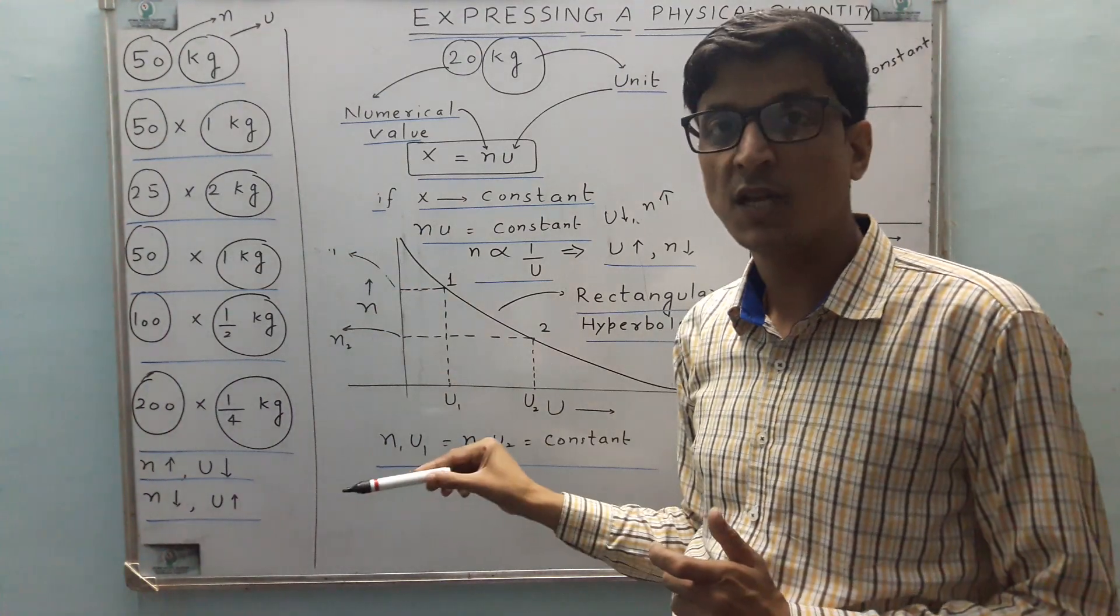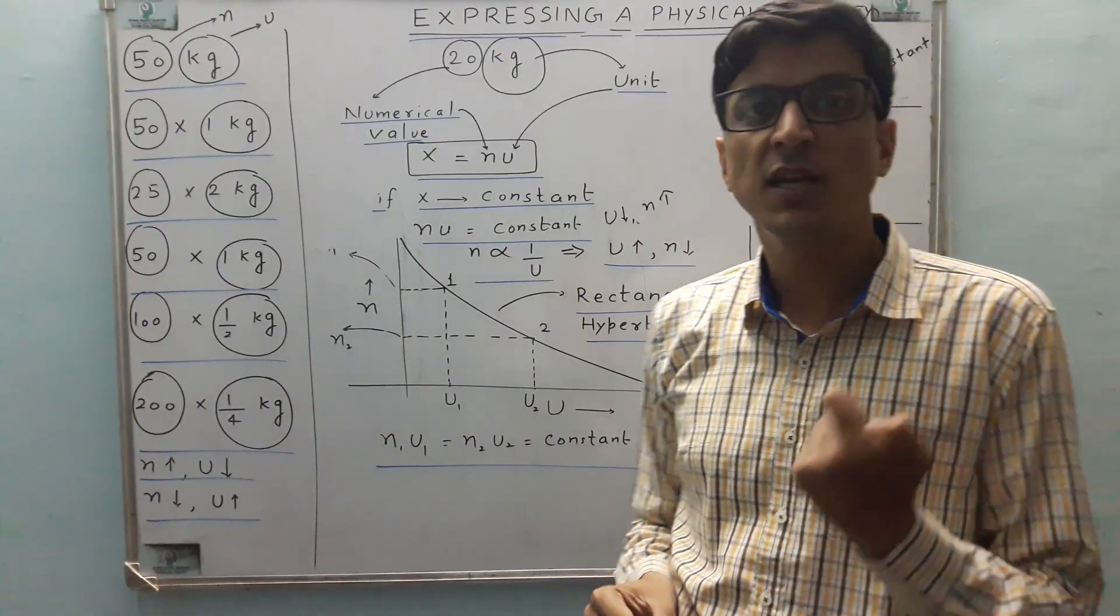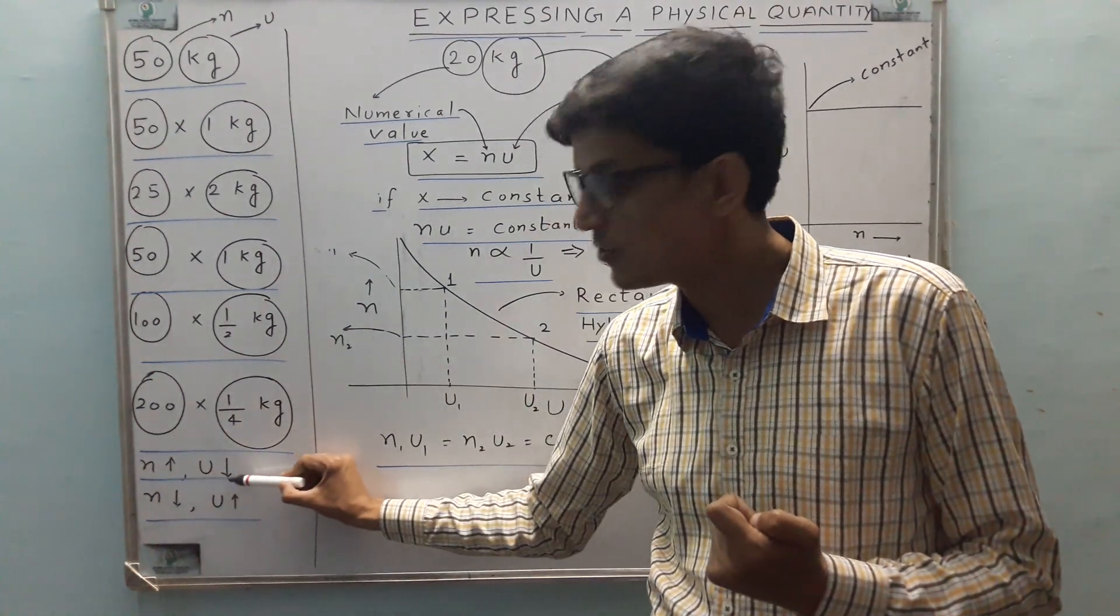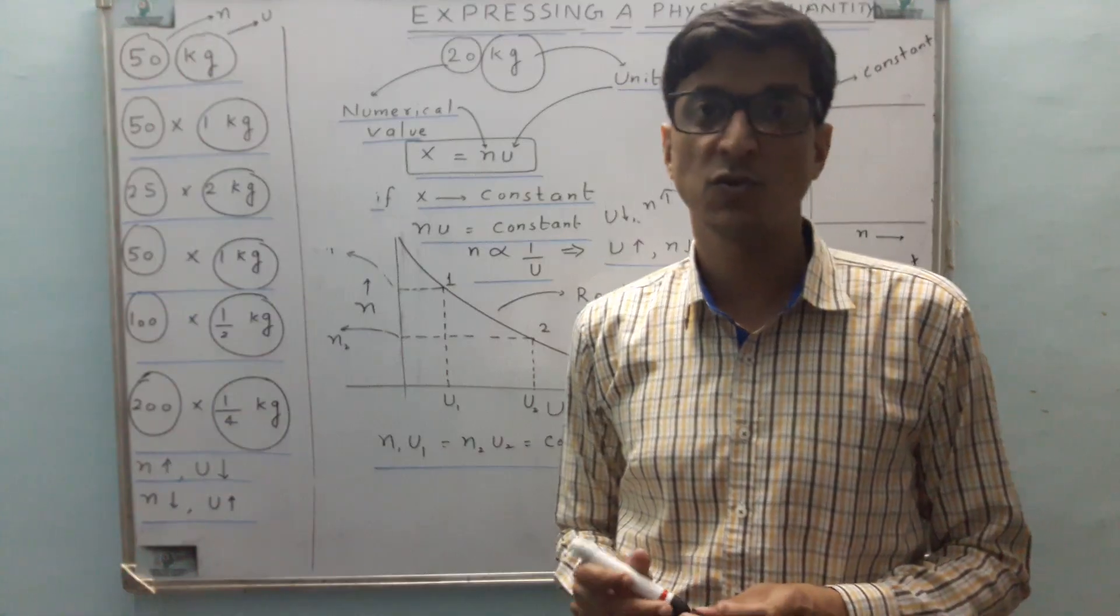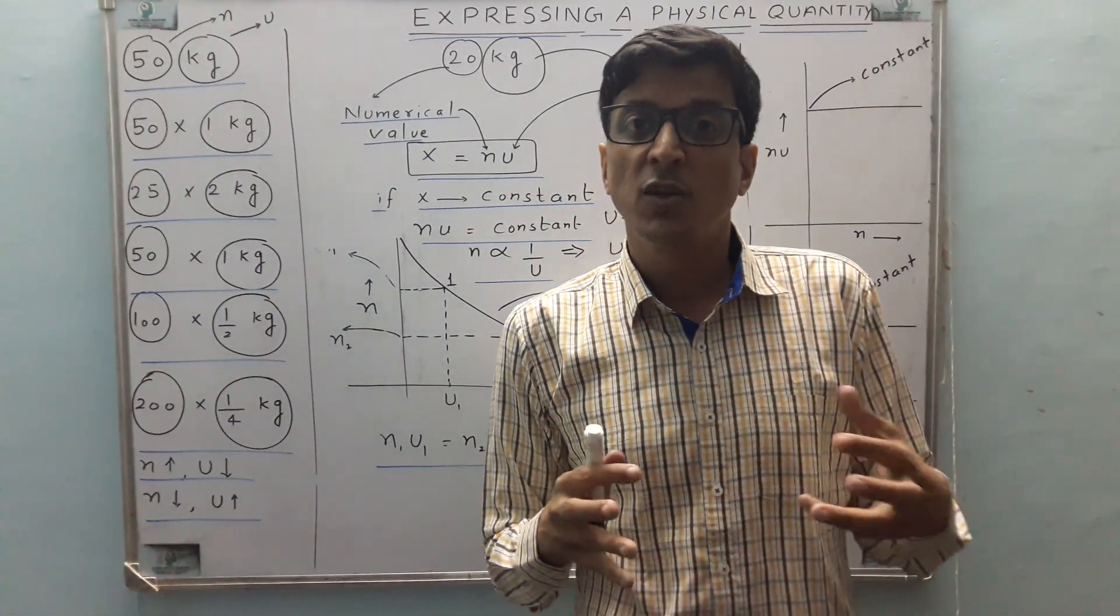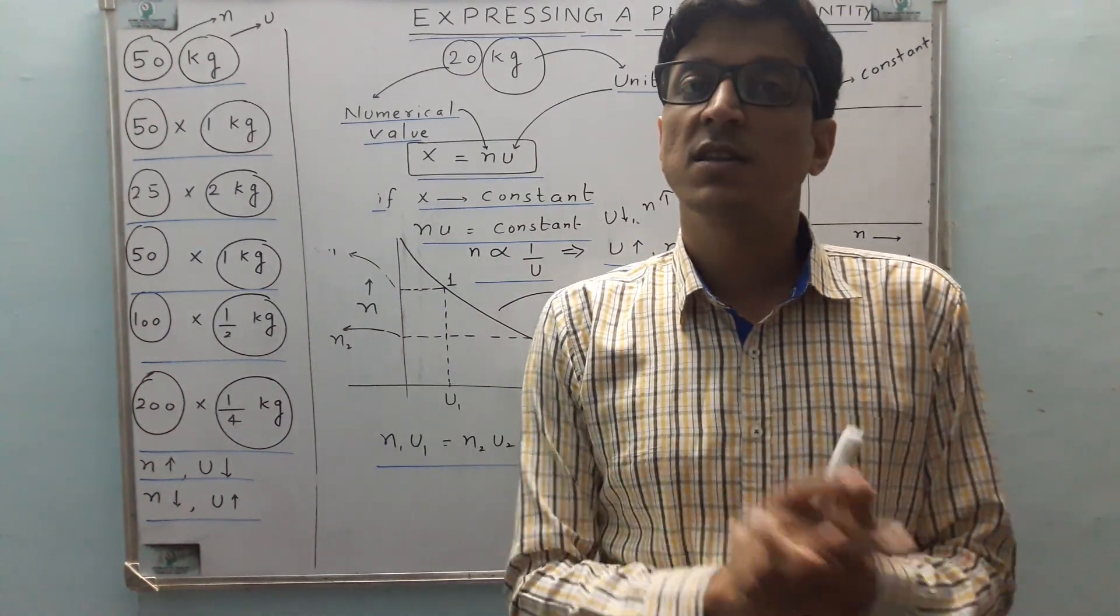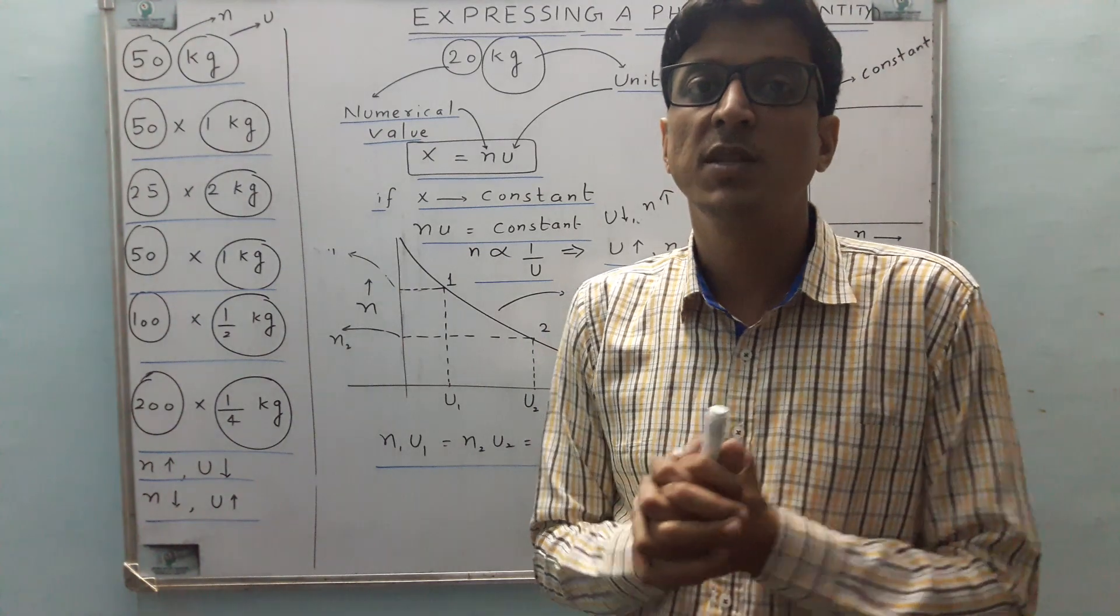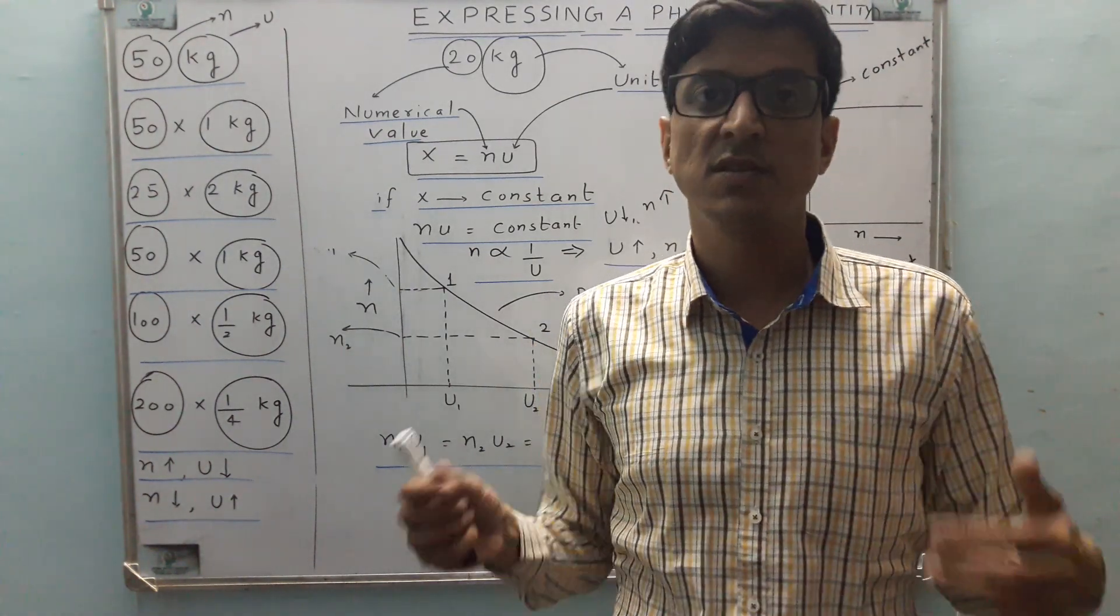So in a nutshell, we can conclude that if numerical value increases, that is n increases, then u decreases. And if n decreases, then u increases. So we can say that for a given amount of physical quantity, numerical value is inversely related to the size of unit. Larger the size of unit, lesser will be the numerical value, and smaller the size of unit, more will be the numerical value. So this is the simple physics behind this.